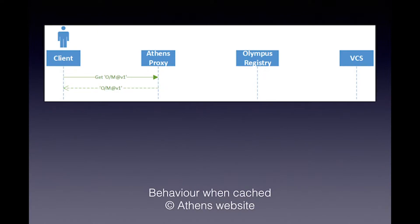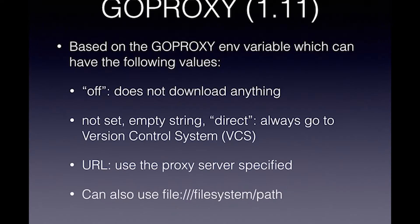There was talk of a registry as well, which Microsoft isn't building anymore — that's being done by Google. The registry is basically like a proxy but on internet scale. You can also use a file system because the proxy is smart enough to know that — if you say 'file' and then a path it can use your local disk. But given that your go installation already caches modules in your go pkg/mod, there's really no need to use that.